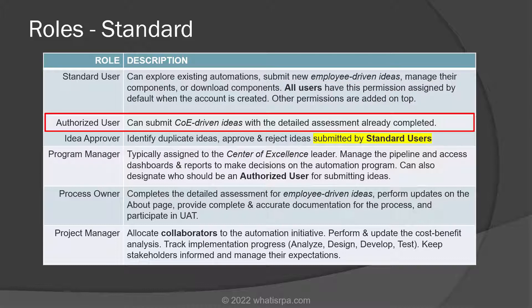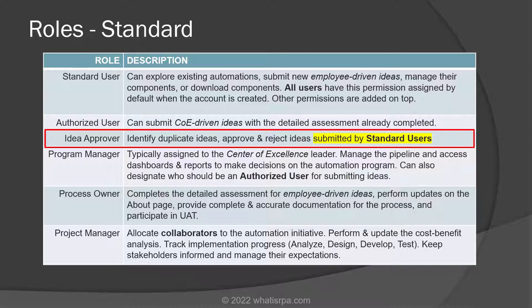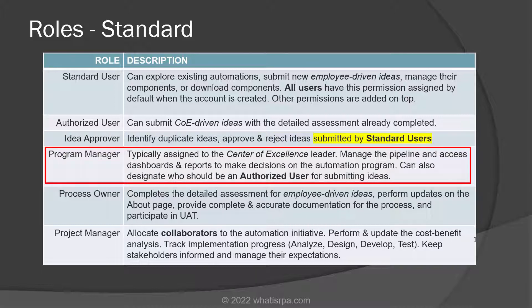The authorized user is typically somebody who has more knowledge about RPA. They can submit COE-driven ideas that include the detailed assessment already completed. The idea approver's role is to identify duplicate ideas and approve and reject ideas that were submitted by standard users. Notice the idea approver doesn't approve ideas that were submitted by the COE authorized user. The program manager is typically assigned to the center of excellence leader, and this person manages the pipeline and accesses dashboards and reports to make decisions about the automation program. This role can also designate who should be an authorized user for submitting ideas.